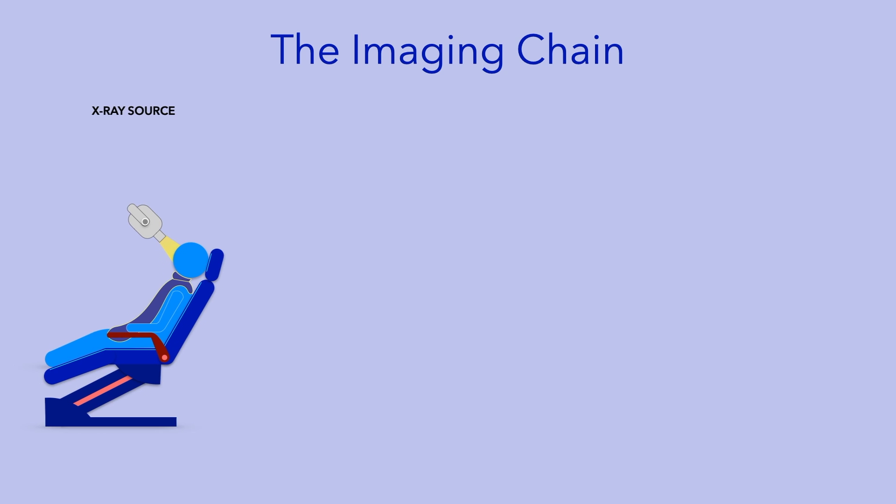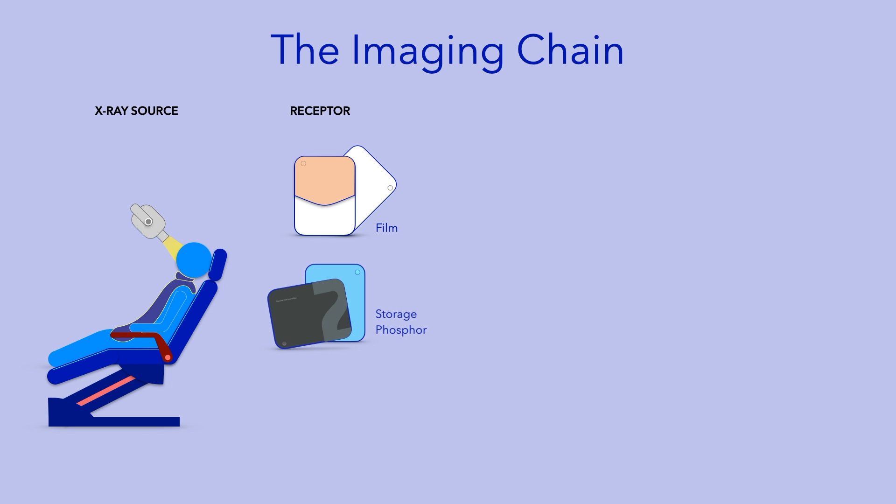In order to make a radiographic image, we need an X-ray source and we need a receptor to capture the pattern of transmitted photons. This receptor may be radiographic film, storage phosphor-based receptors, or semiconductor-based receptors called CCD or CMOS sensors.